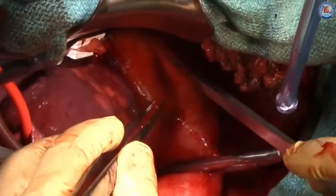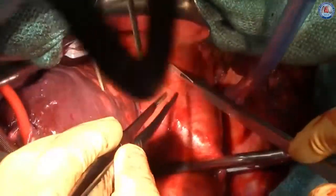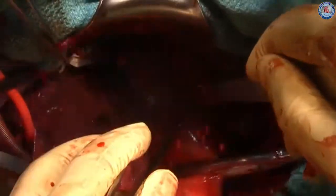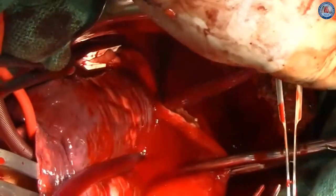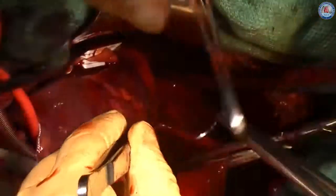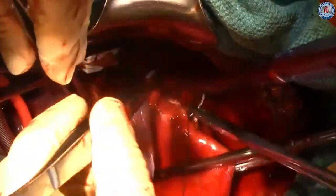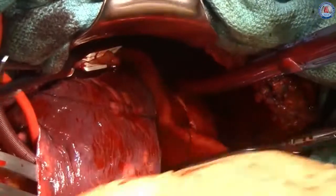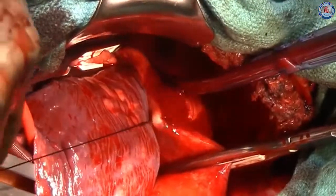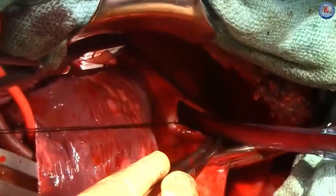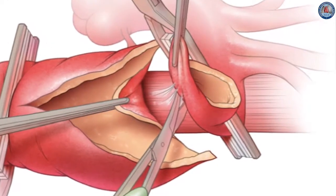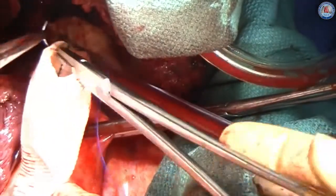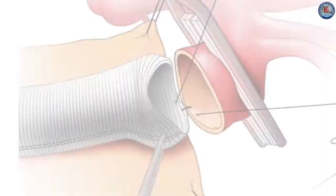The descending thoracic aorta is now opened and the chronic dissection exposed. Heavy silk stay sutures are applied to expose the aneurysm. The inclusion technique is avoided by separating the proximal descending thoracic aorta from the esophagus. The proximal anastomosis is now performed using a running 3-0 polypropylene suture.